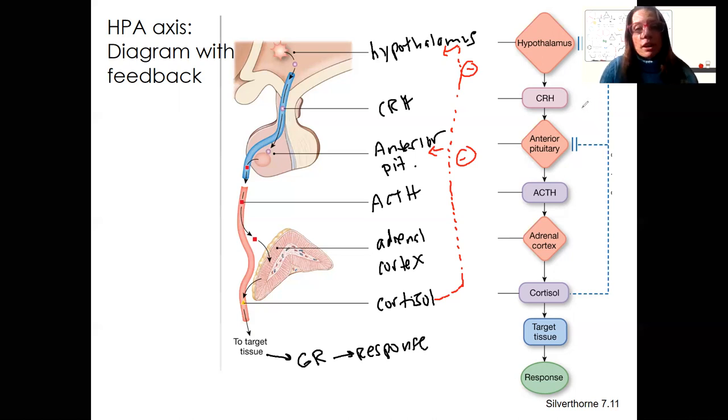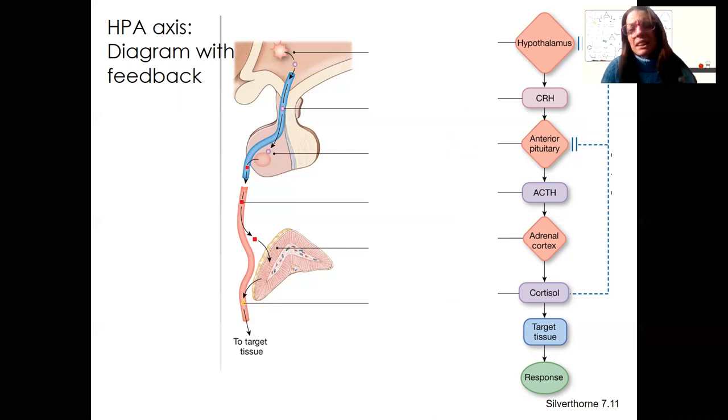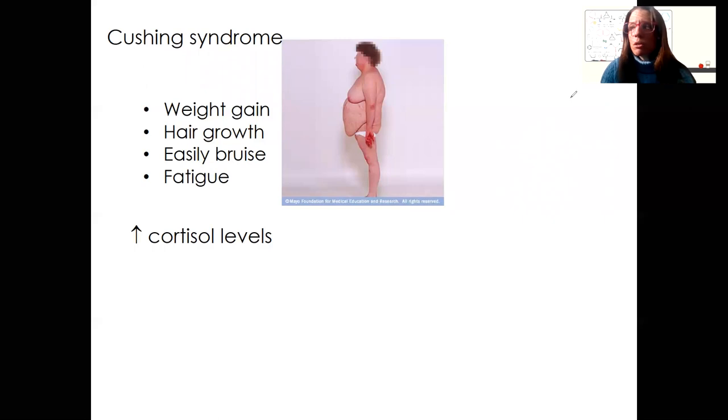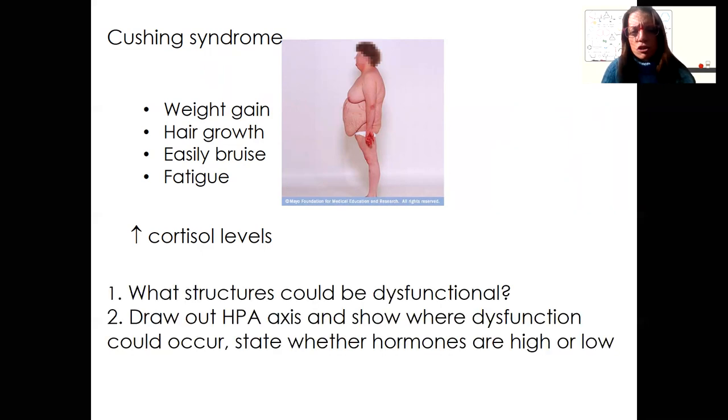So these can become the dysregulation that occurs in anxiety and depression is very complex. We're going to be looking at something a little simpler in terms of dysfunction of an organ in this pathway and its result on cortisol levels. So one of these examples is Cushing syndrome. Cushing syndrome is marked by weight gain, hair growth, easily bruising, and fatigue. And this is caused by high levels of cortisol. So Cushing syndrome, the indicator of it is high cortisol, the cause of it. And these are some of the symptoms. So why don't you think about high cortisol? What could cause that? So here's two questions. What structures could be dysfunctional theoretically to cause high cortisol? Draw out the HPA axis and show where this dysfunction could occur and whether that's causing hormones to be high or low.